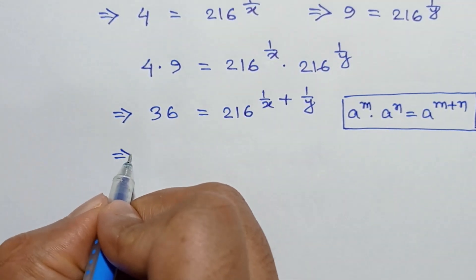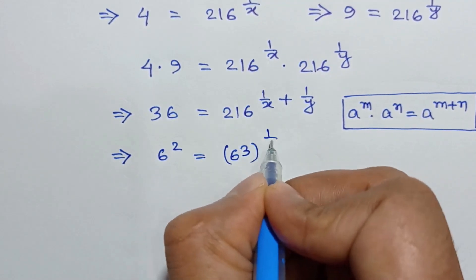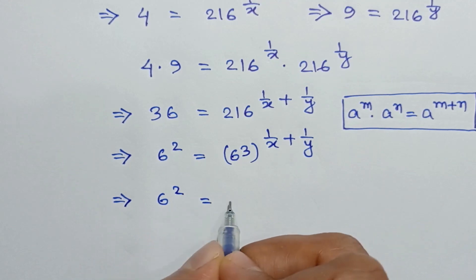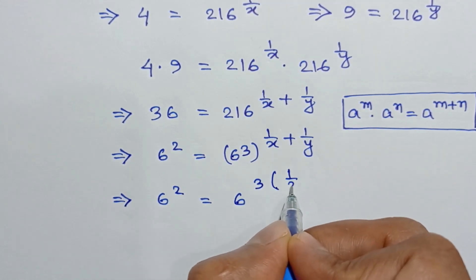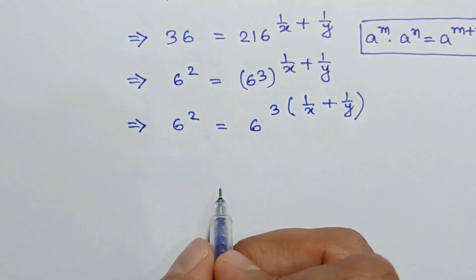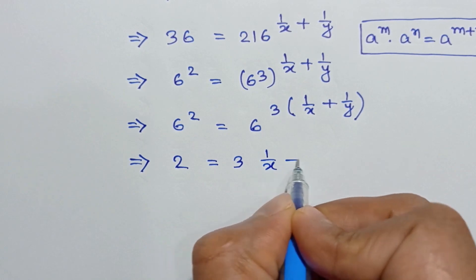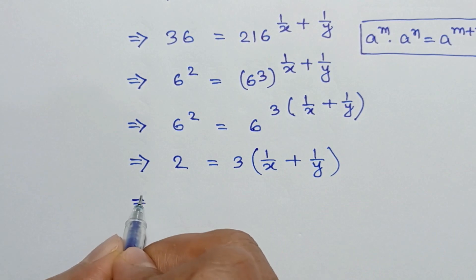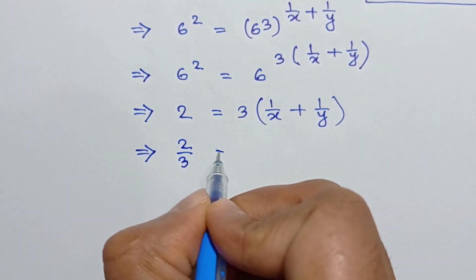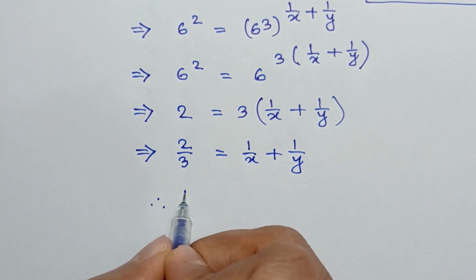Now 4 times 9 equals 36, which equals 6 squared, and 216 equals 6 cubed. So 6 squared is equal to 6 to the power 3 times (1/x plus 1/y). Since the bases are the same, the powers must be equal, so 2 is equal to 3 times (1/x plus 1/y). Dividing both sides by 3, we get 1/x plus 1/y is equal to 2/3.